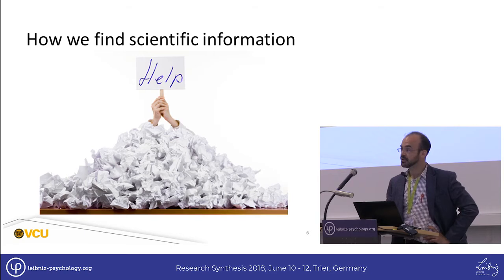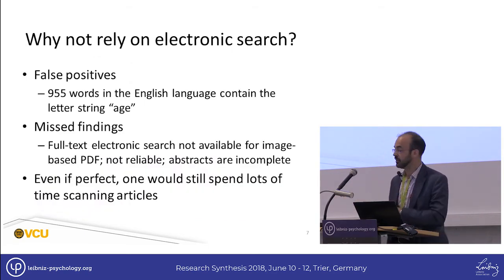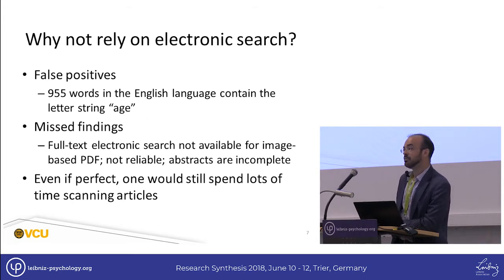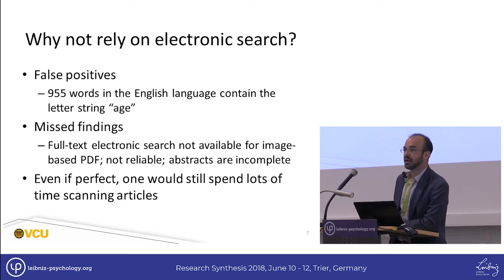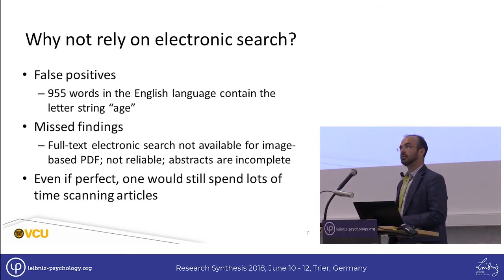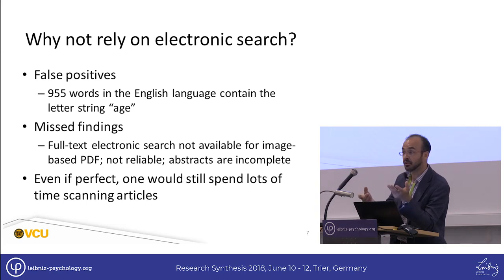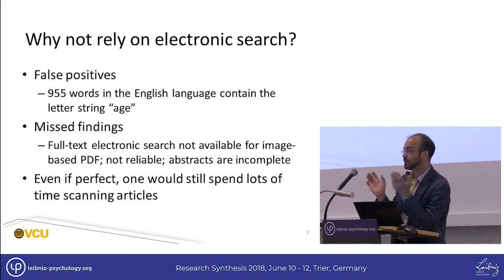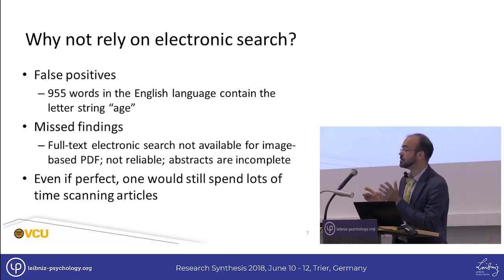Some folks might say, why not just rely on electronic search — go to EBSCO and type in what you're interested in? The problem is that text searches are not perfect. For example, the letter string A-G-E exists in 955 words in the English language, which gets tricky in the field of management, which contains those three letters. Also, these searches tend to miss findings. Before PDFs were text-based — when they were image-based — you can't search full text until OCR has been applied, and there's quite a backlog of those PDF files. Electronic search is not perfectly reliable.